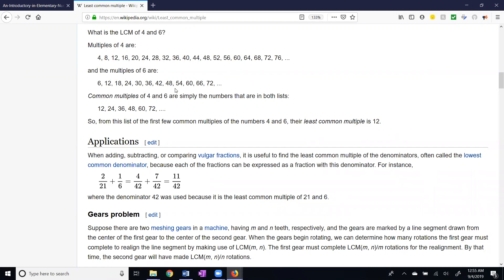And then we look through until we find the common multiples. The common multiples are 12, 24, 36, and so on. And the least common multiple is 12.